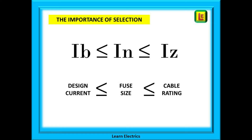The equation tells us that IB must be equal to or less than IN, and that IN must be equal to or less than IZ. You can see below the equation just what these symbols mean. The design current — that is to say what the appliance is manufactured to take — must be equal to or less than the size of the circuit breaker. If not, the breaker would trip every time the appliance was switched on.